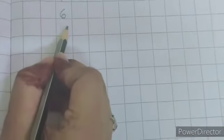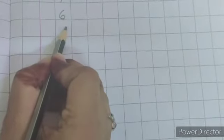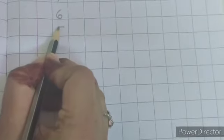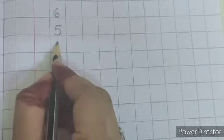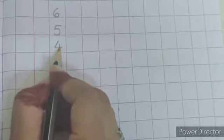Now, which is the next number? 5. For 5, slipping line, slanting line